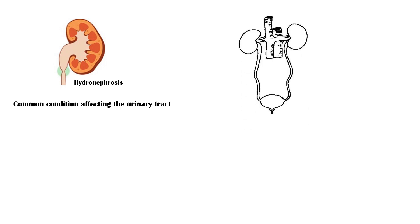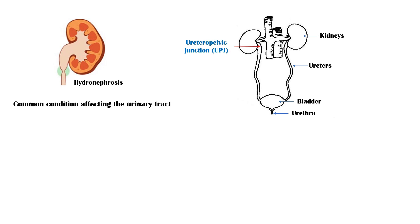The human urinary tract consists of four major parts: the kidneys, which filter the blood and produce urine; the bladder, which stores urine before voiding; and the two ureters, which connect each kidney with the bladder; and the urethra, which drains urine out from the bladder. The junction where the ureter starts in the kidney is called the ureteropelvic junction, and the junction where the ureter joins the bladder is called the ureterovesical junction.